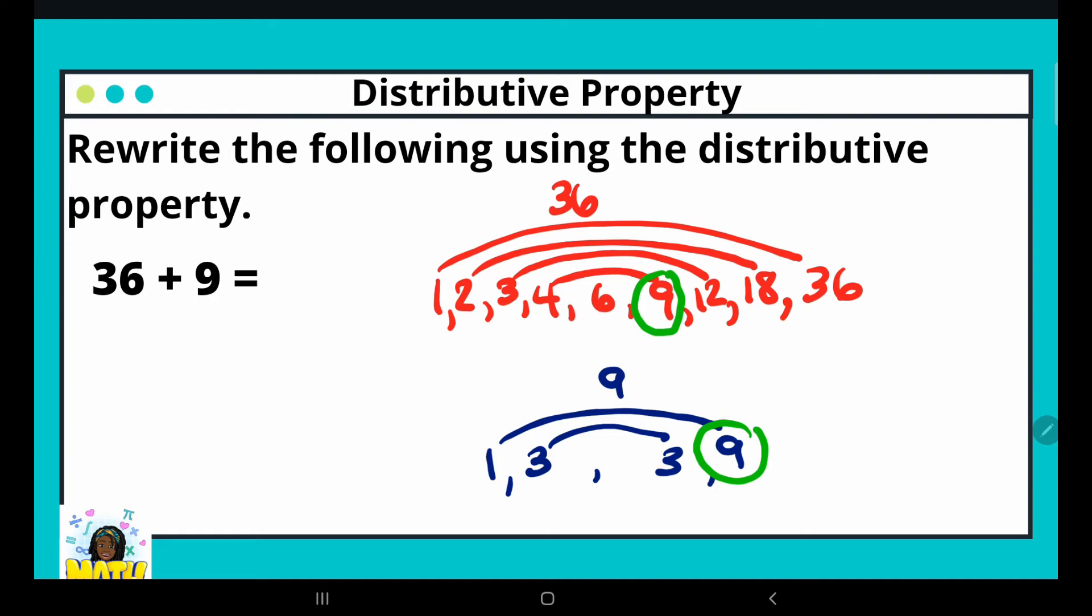Now pay close attention to the factor pair associated with the 9, which here is 4 for 36 and 1 for the number 9. Now we're going to rewrite 36 plus 9 using the distributive property. I've already completed step 1, identified my GCF, and now I'm going to factor that out. I'm going to put it on the outside of my parentheses.